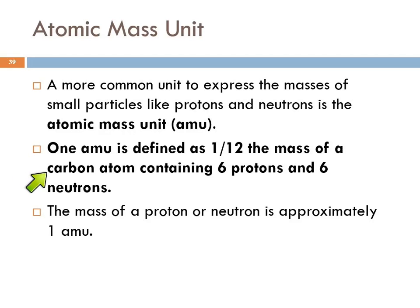We define an atomic mass unit as 1/12th the mass of a carbon atom that has 6 protons and 6 neutrons. Essentially, the mass of a proton or a neutron is approximately 1 atomic mass unit. A carbon atom containing 6 protons and 6 neutrons has 12 of these particles with significant mass. It would weigh 12 atomic mass units. An atomic mass unit is 1/12th of that carbon atom.